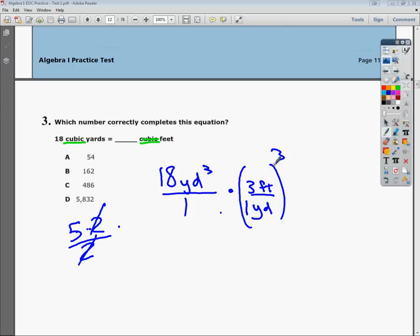So I'll go ahead and do 3 to the third power, and that gives me 27 feet cubed over 1 to the third power being 1 yard cubed.